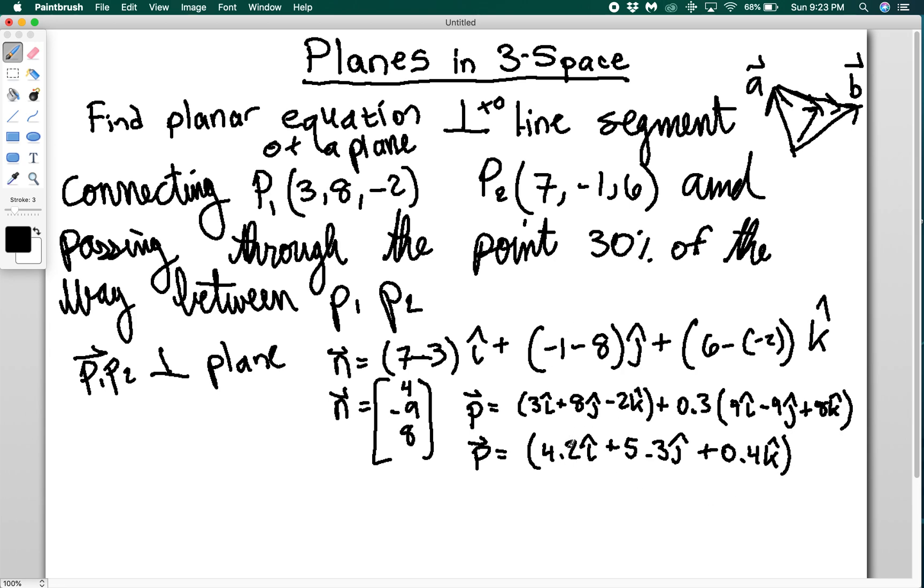Which means the point that I want to plug in is 4.2, 5.3, 0.4. Which means that I can say that I have 4 times 4.2. Then I have minus 9 times 5.3, plus 8 times 0.4, equals D, some constant. And when I put all this in, I get that D is equal to negative 27.7. Which means that my final planar equation, my actual answer for the problem, is going to be 4x minus 9y plus 8z is equal to negative 27.7. This is my answer.